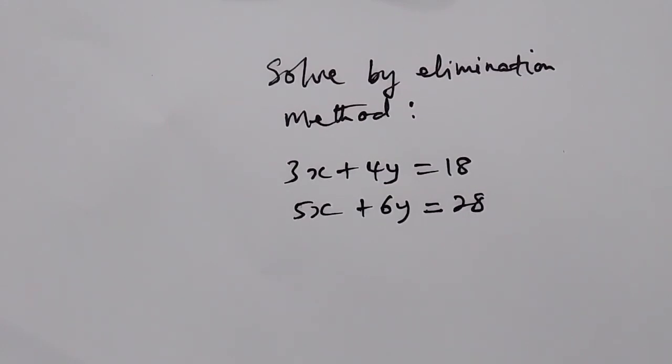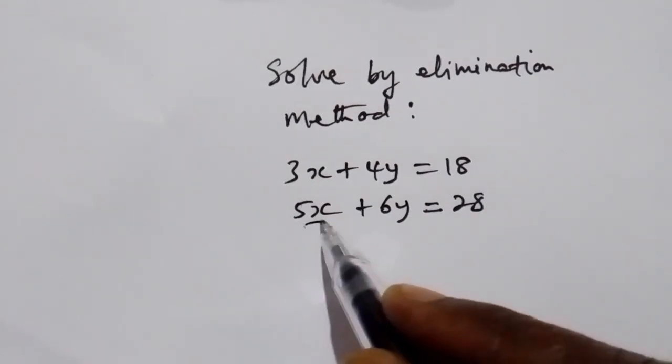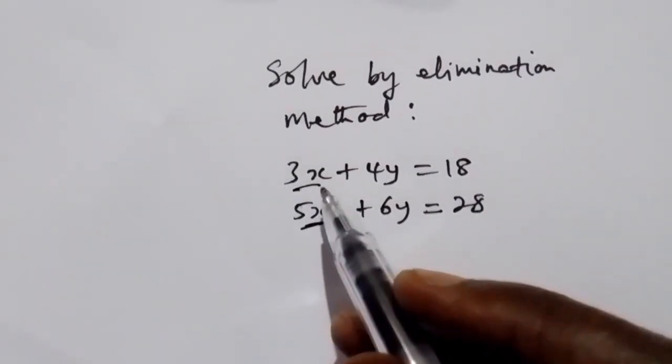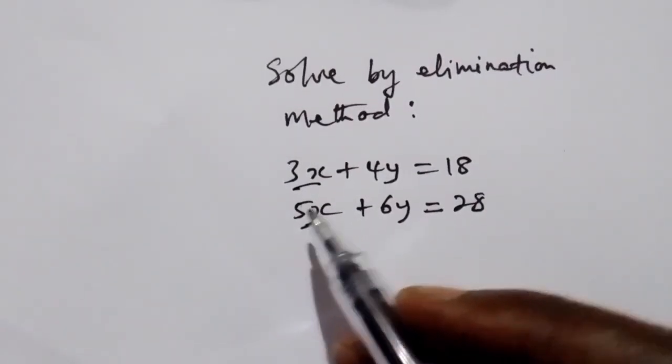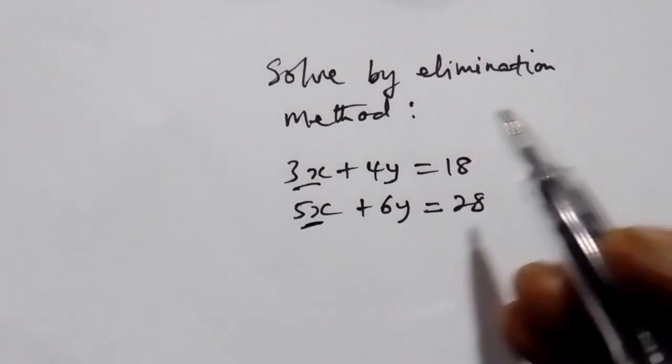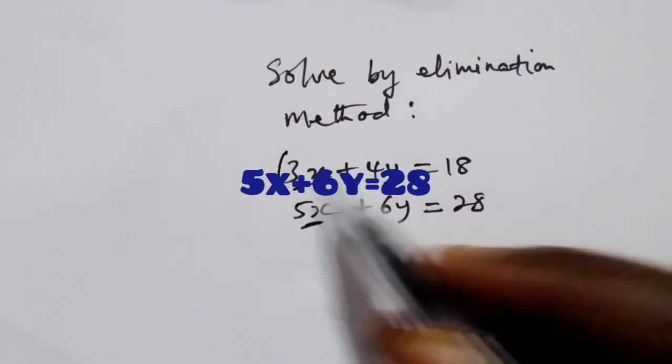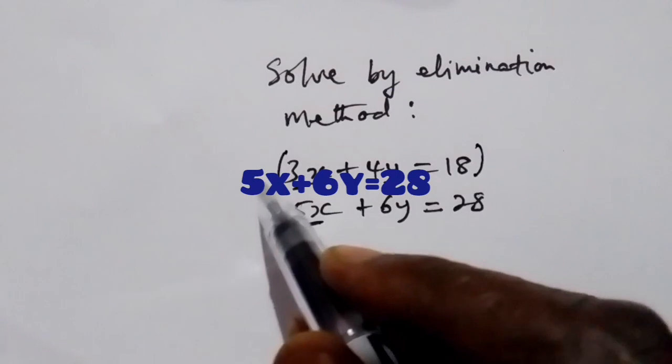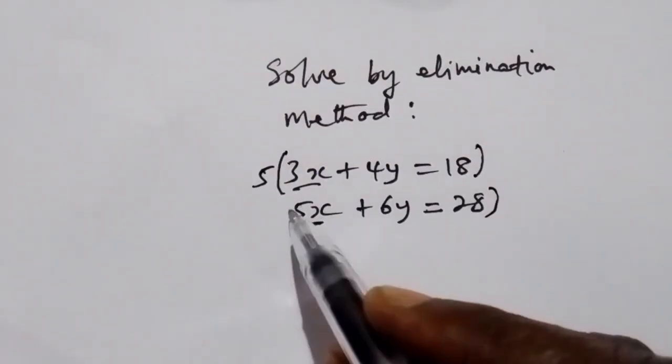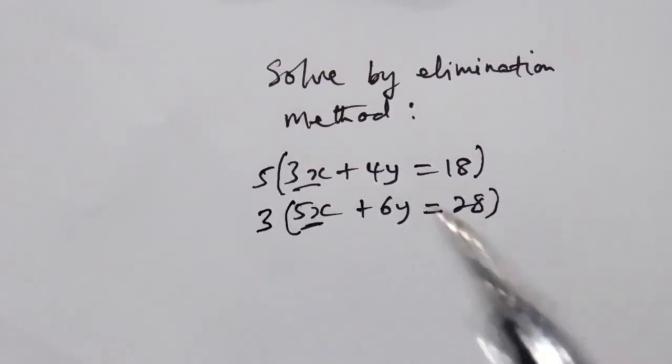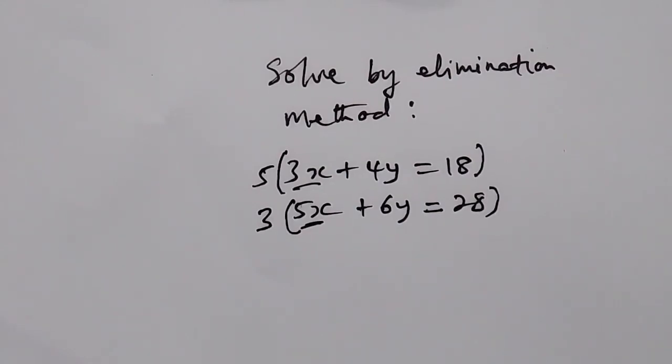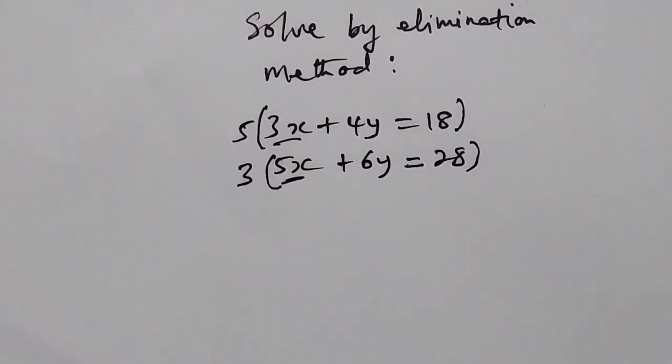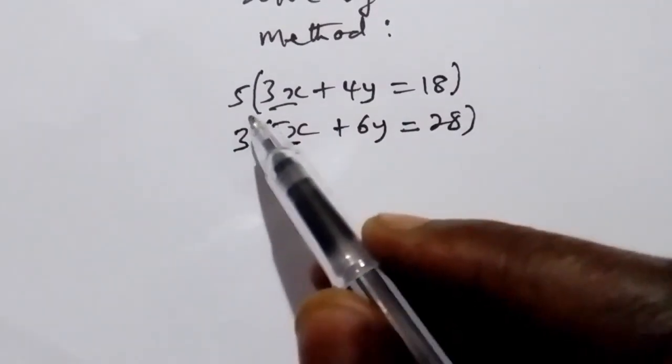We want to get rid of x, so what do we do? We multiply here by 5 and we multiply here by 3 in order for us to eliminate x. So when we multiply...